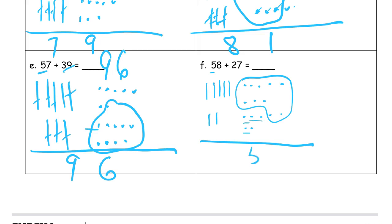And here are my tens. I've got five here. Two more is seven, and one more is eight — 85.